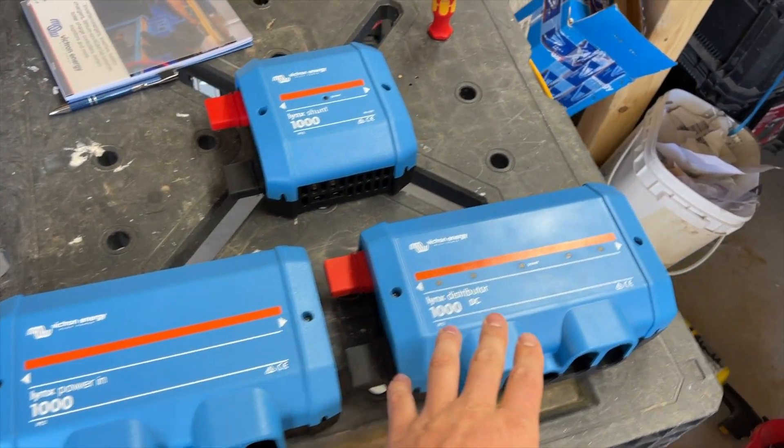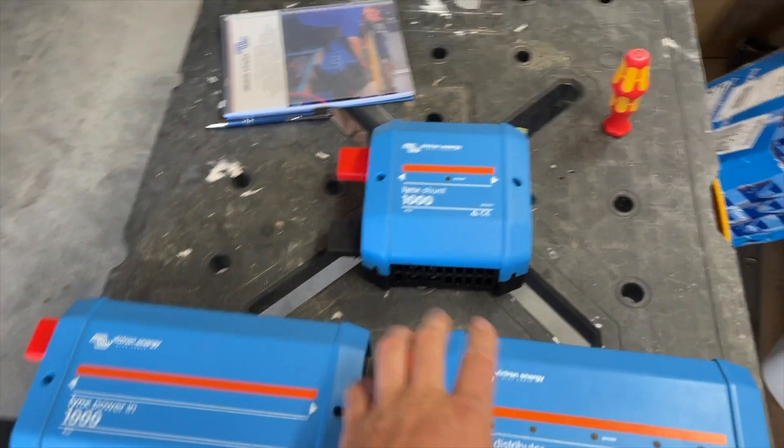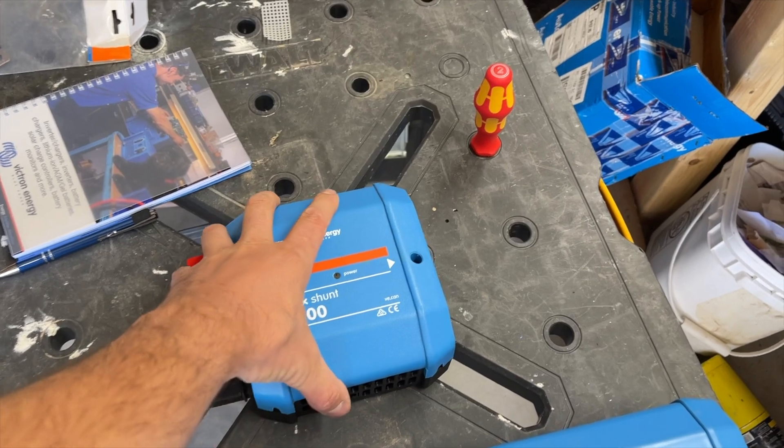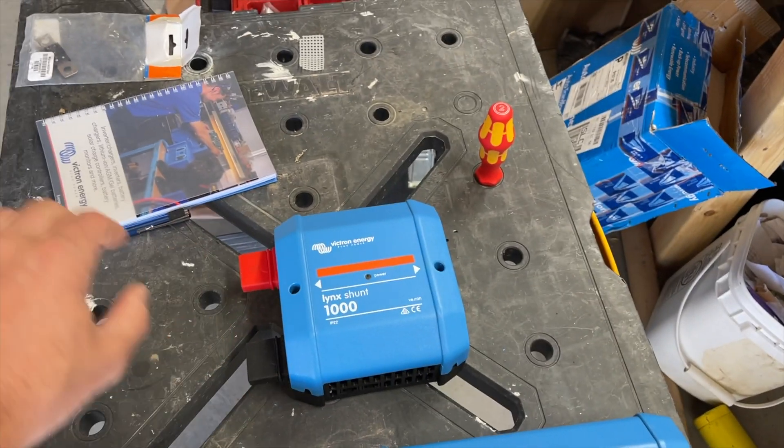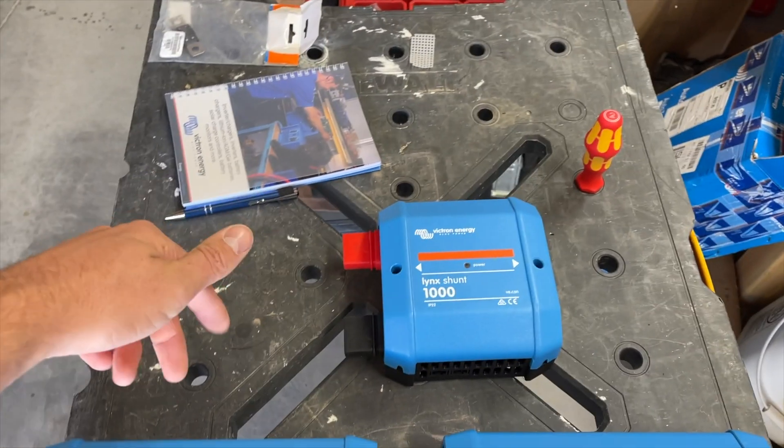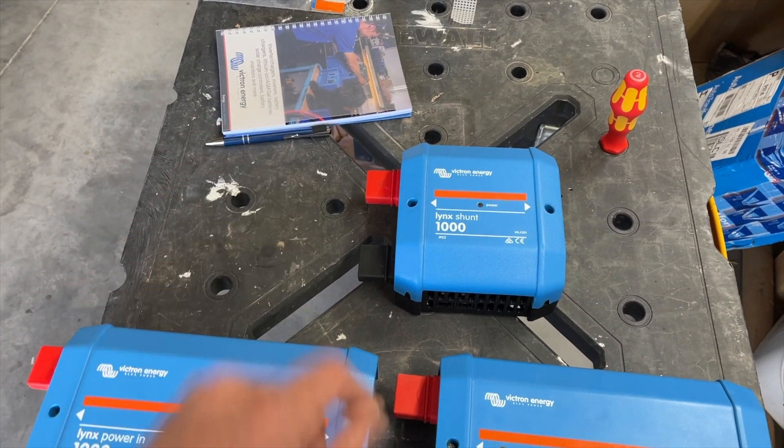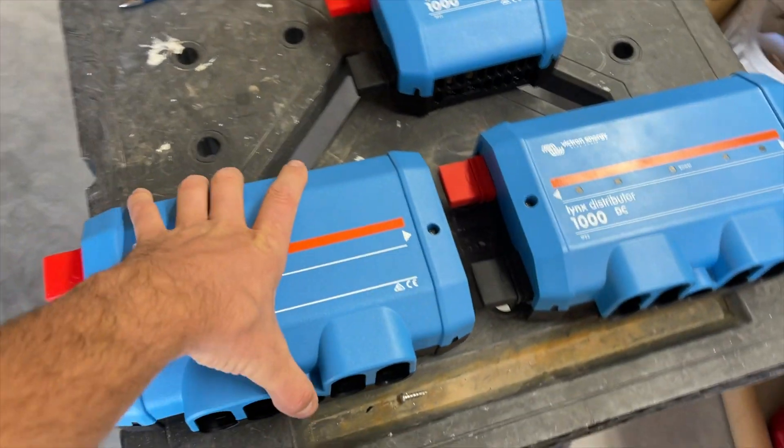You've got the Lynx power in, you've got the Lynx distributor. Here we have the Lynx shunt. There's also a Lynx BMS. It looks just like the Lynx shunt, but it's got a contactor inside and all of the internals, the brains to run a complete BMS.